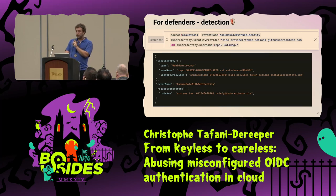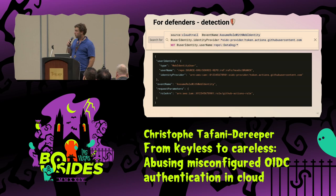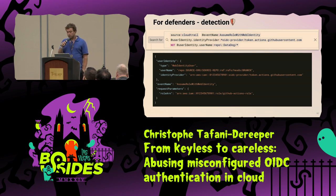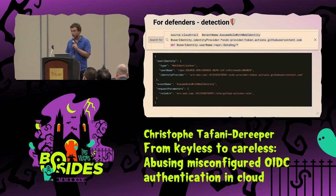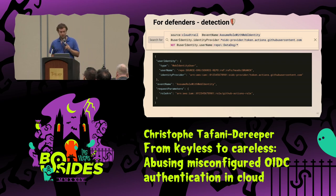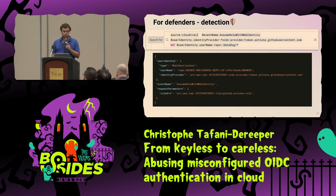It's also quite easy to detect exploitation or exploitation attempts using CloudTrail. If you look at AssumeRoleWithWebIdentity events and filter for user identity usernames not starting with your GitHub org name, you'll find anyone trying to assume your roles from outside your org. That's a quick win to detect early or successful exploitation attempts.